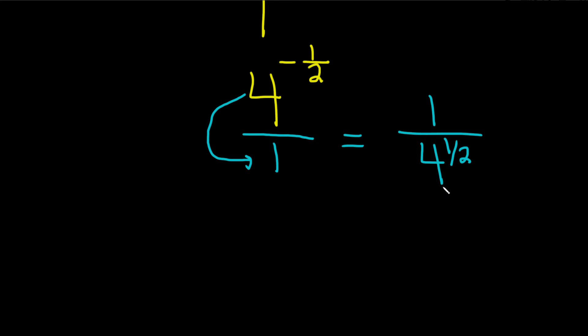And so anything to the 1 half power is the square root. So this is 1 over the square root of 4. And the square root of 4 is 2. So this is just 1 over 2. And that would be the final answer.